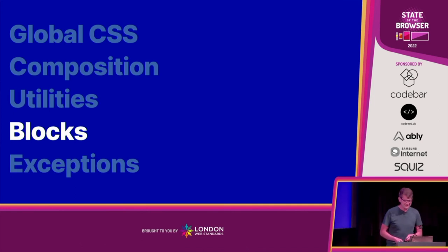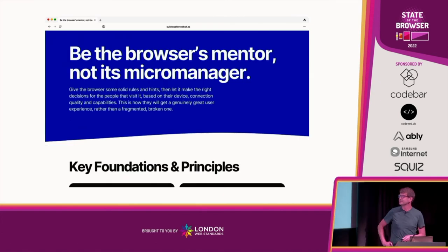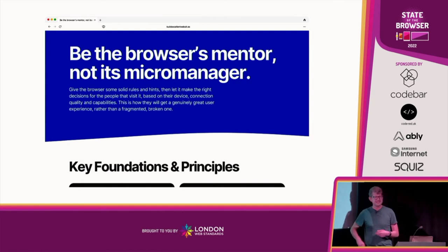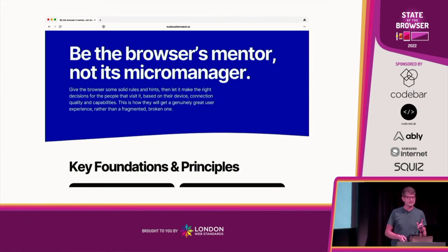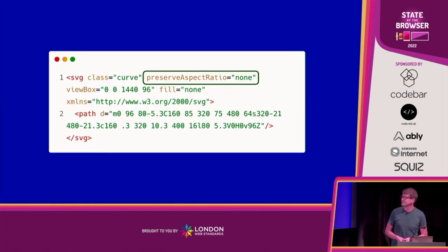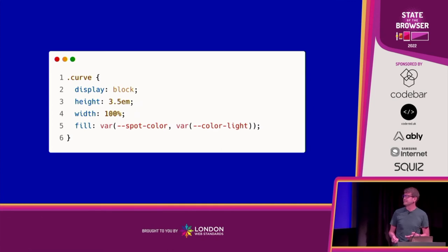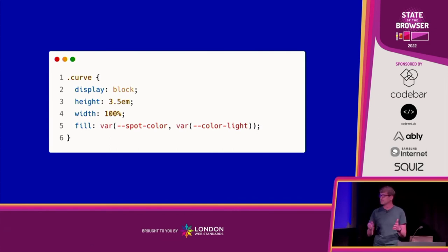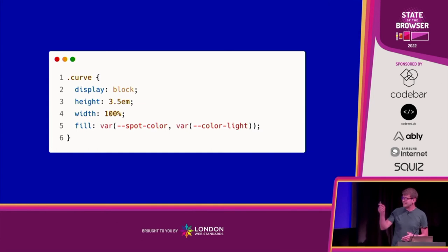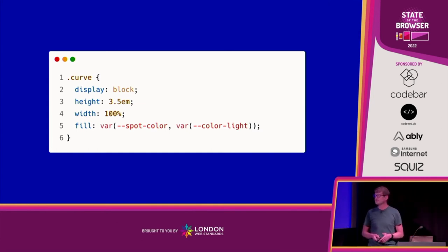We're getting there. Now we do a bit more coloring in, and the best part of the site are these little curvy shapes. I'm using an SVG — one I made in Illustrator. I've added a class of `curve` as our block, and the most important attribute is removing aspect ratio preservation. In our block CSS we set a fixed height and let the browser deal with the width. By removing the aspect ratio, the SVG becomes squidgy, which is fine — I just want a curve, I don't care exactly what it looks like.